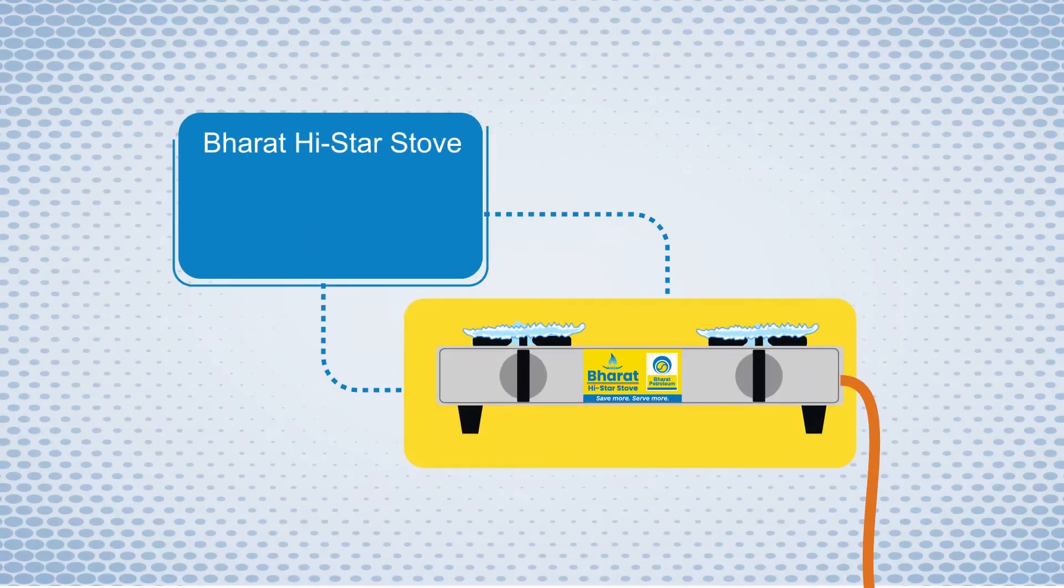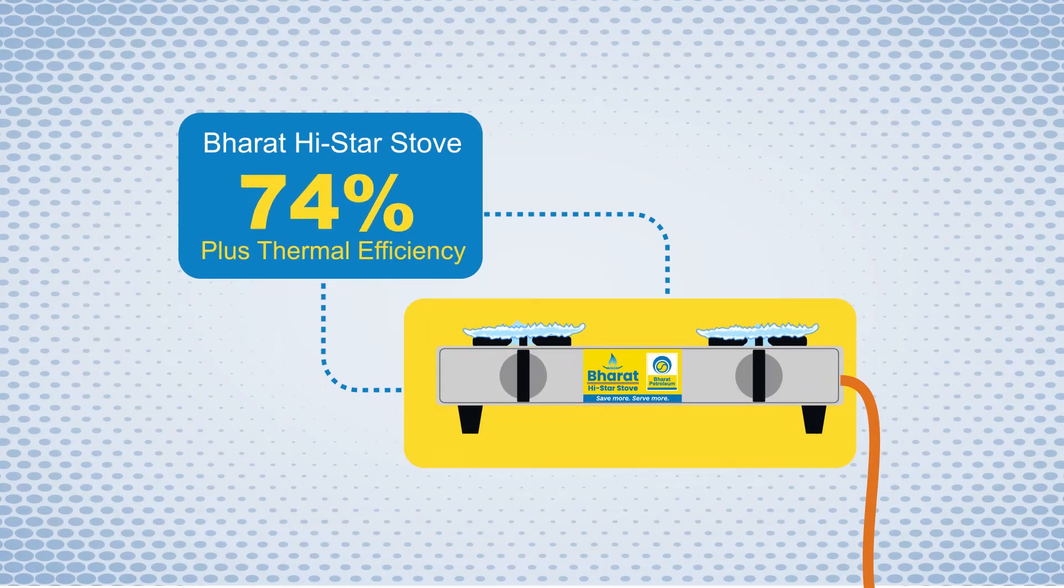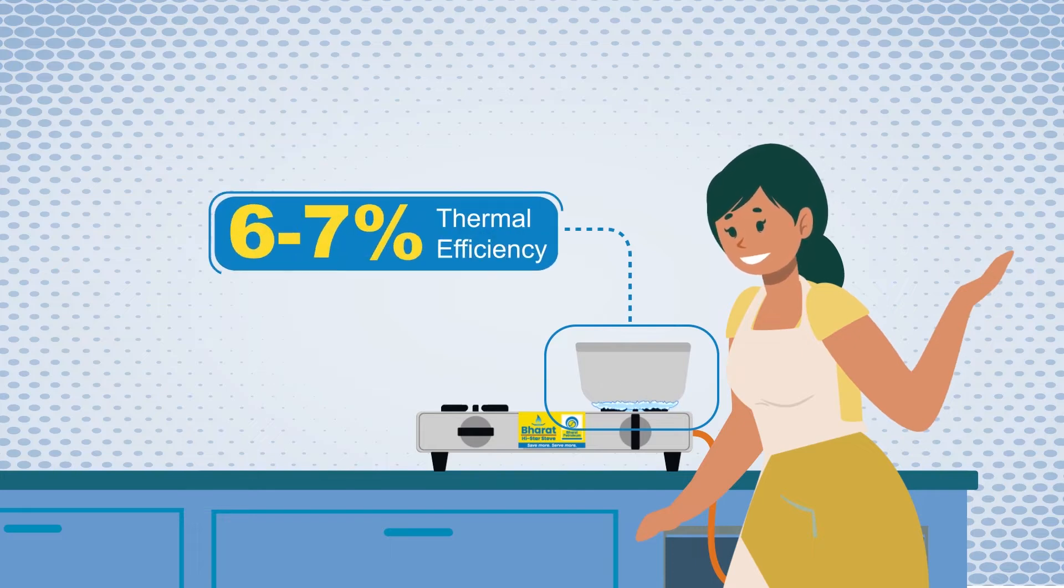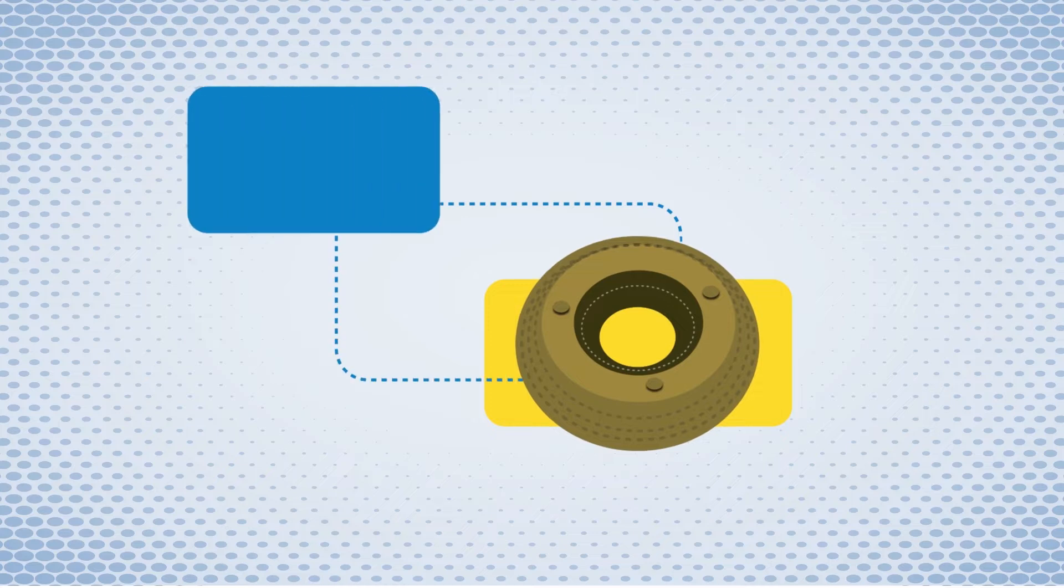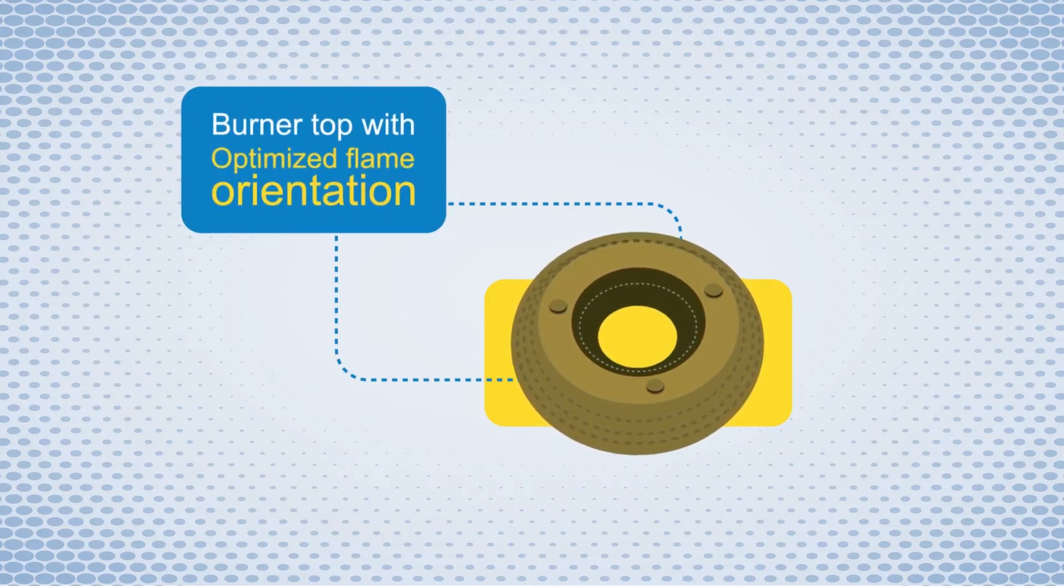More than 74% equivalent to BEE star two rating. This is six to seven percent more efficient than the normal burners available in India and abroad. This fuel saving initiative comes with a burner top that provides optimized flame orientation.